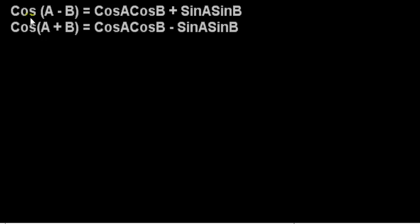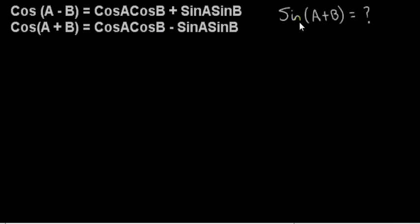In the last video, we showed that the cosine of the compound angle A minus B could be written in terms of the cosine and sine of the component angles A and B. By replacing B with minus B, we got a similar identity for the cosine of A plus B — it just changes the sign from plus to minus. Now in this video, we're going to do something similar for the sine of A plus B, writing sine of A plus B in terms of the sine and cosine of the component angles A and B.